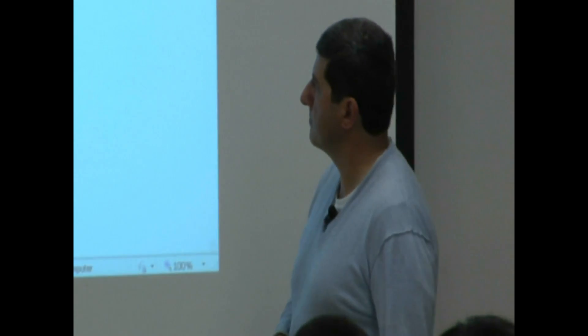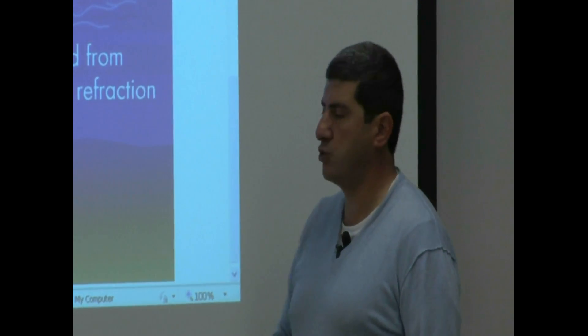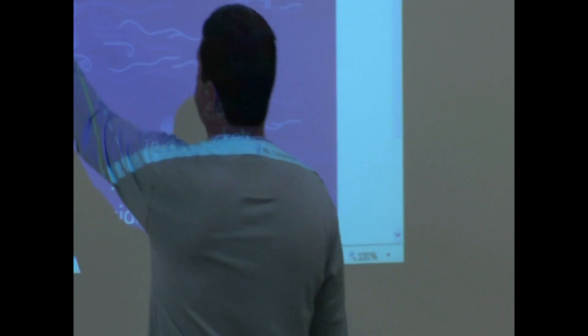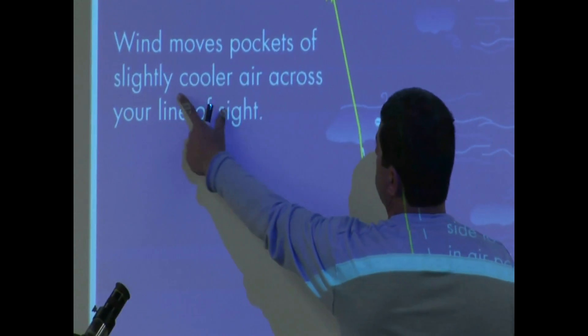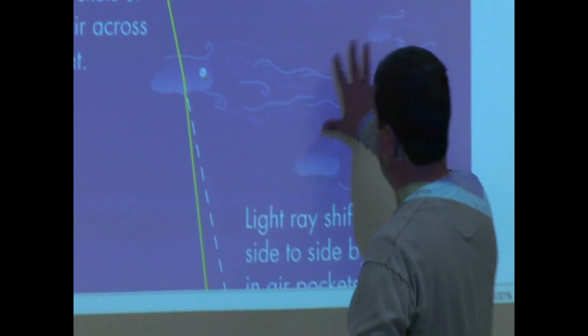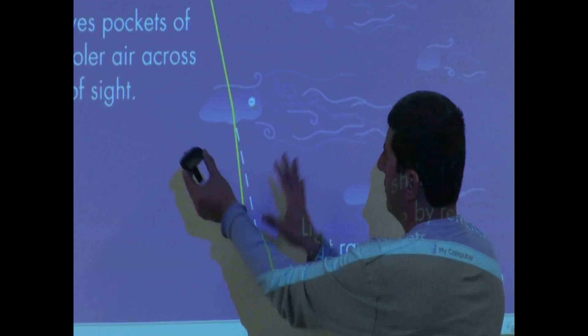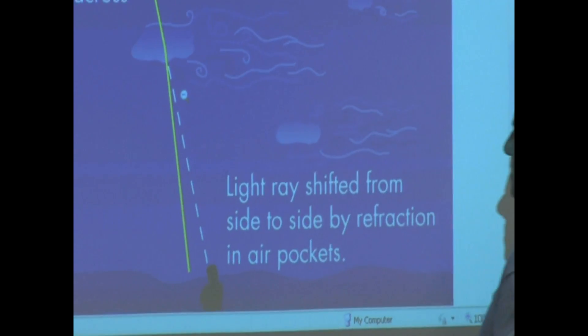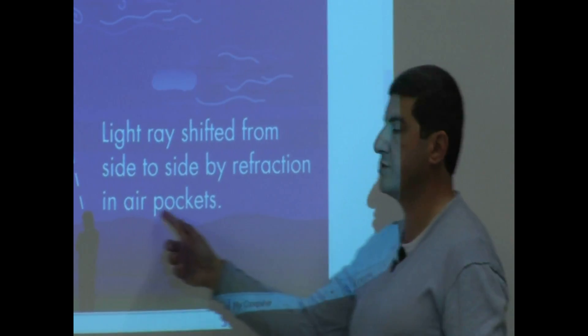This picture I'm going to show you. This picture kind of explains to you what our atmosphere does that causes blurring. You know the song that we sing, twinkle, twinkle, little star? Do the stars really twinkle? No. It's because the light that's coming from the star, wind moves pockets of slightly cooler air across your line of sight. So, the atmosphere is in front of you, and it's constantly moving, and by the time that the light gets to you, the light beam is kind of going back and forth. So, light rays shifted from side to side by refraction in the air pockets.